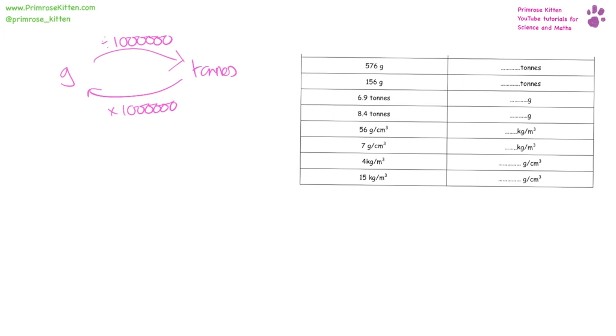Slightly smaller when we're going from grams per centimeter cubed to kilograms per meters cubed, we need to times by a thousand and then divide by a thousand.